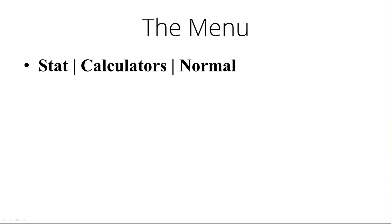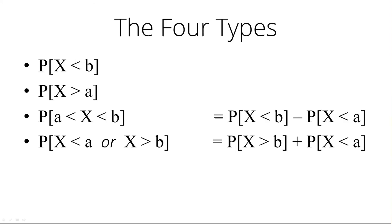But before we see that, let's realize that there really are just four types of probabilities you'll ever be asked to calculate. The first type is the probability that X is less than some given value. The second is that X is greater than some given value. The third is that X is between two given values. And the fourth is that X is outside of two given values.